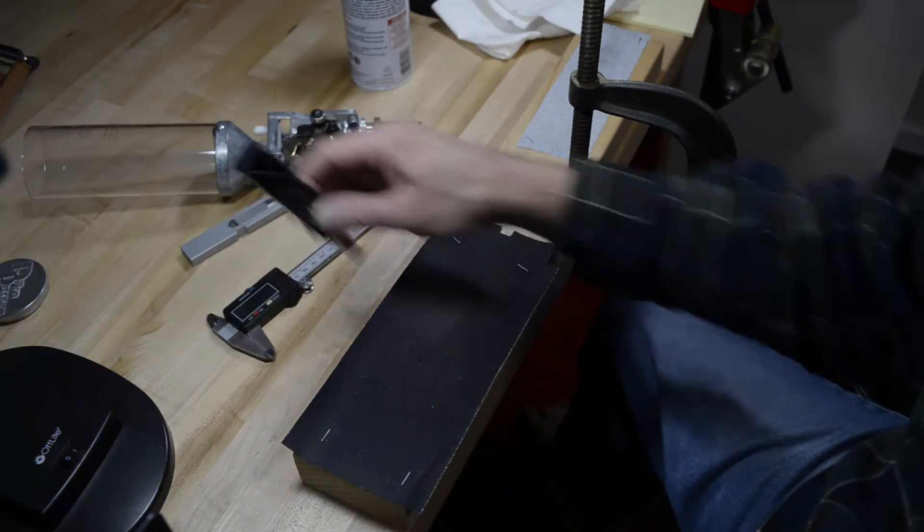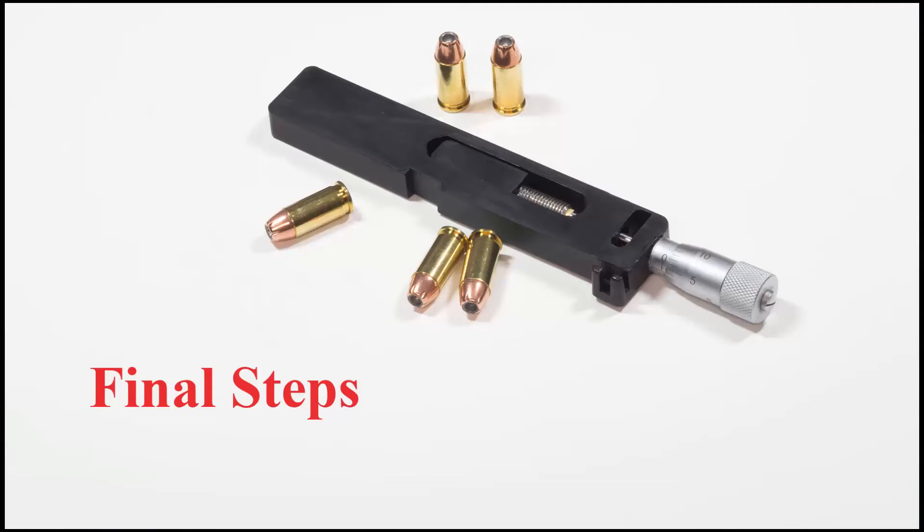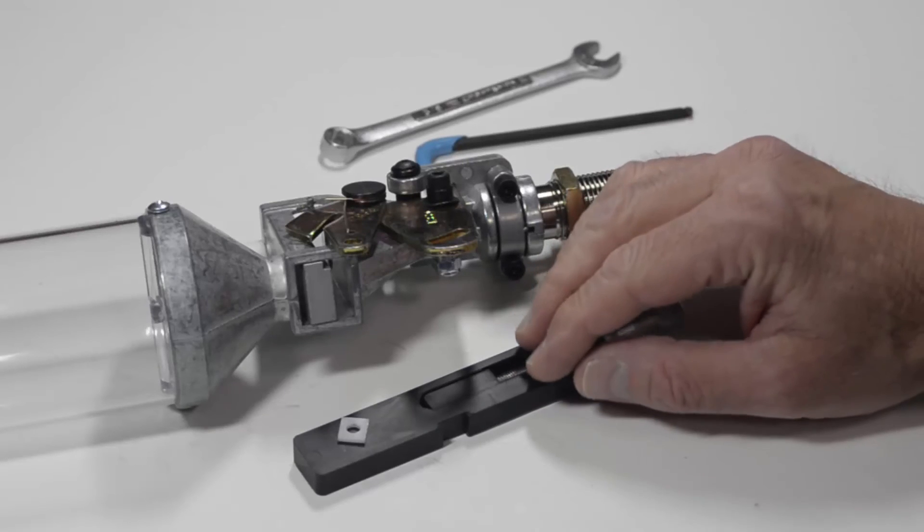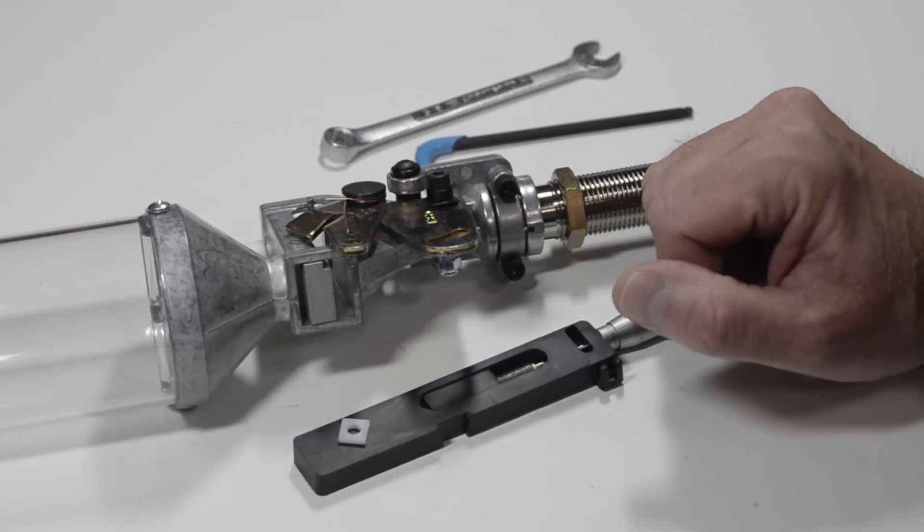So next thing we're going to do is install the powder bar into the powder measure. Now that we have the Arredondo powder bar to the correct thickness, let's go ahead and install it into the powder measure.